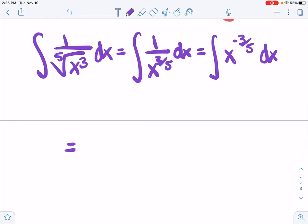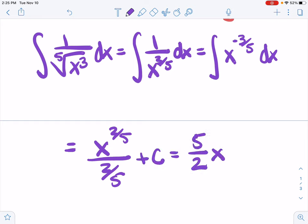So negative 3 fifths plus 1, that's negative 3 fifths plus 5 fifths. That's x to the 2 fifths over 2 fifths plus C, which we again would rather write as 5 halves x to the 2 fifths plus C.